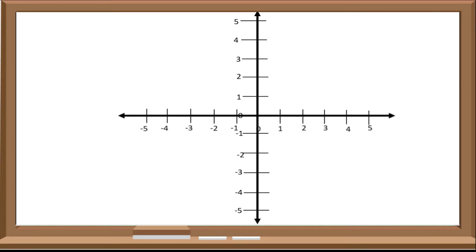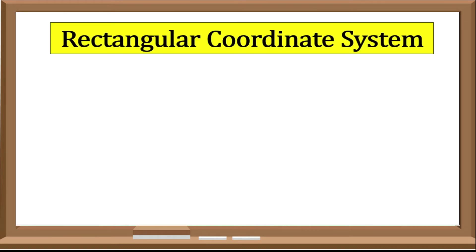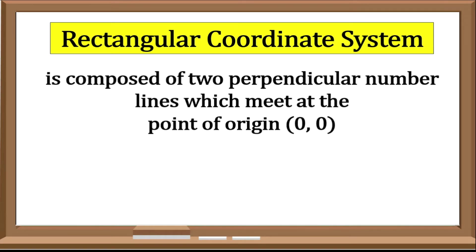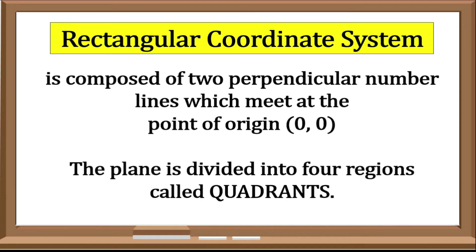First, let us define properly the Rectangular Coordinate System. The Rectangular Coordinate System is composed of two perpendicular number lines which meet at the point of origin, zero-zero. As a result, the plane is divided into four regions called Quadrants.